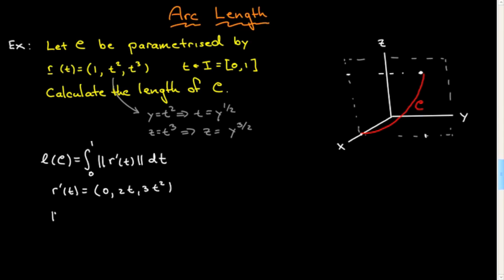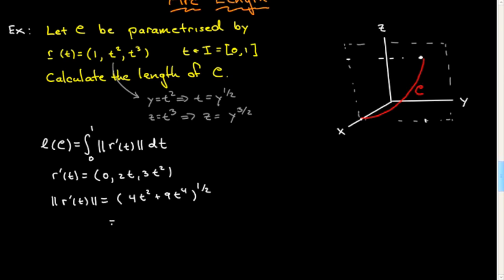All right, straightforward enough, modulus of r prime is equal to zero squared, I'll leave that out, 4t squared plus 9t to the fourth. I think I'll just continue on downwards here. So I'll go ahead and pull out this t, that gives me t, I'll leave it forward there, 4 plus 9t squared. And again, there's no problem pulling out the t because t is strictly positive.